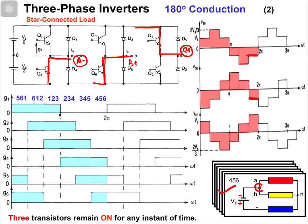Phase C voltage vcn = (2/3)Vs. After this the switching states are repeated: switches 5, 6, and 1 are turned on, then 1, 2, and 6, and so on. These switching states are repeated periodically.